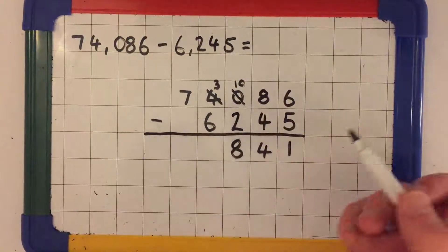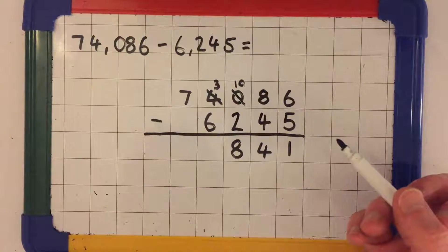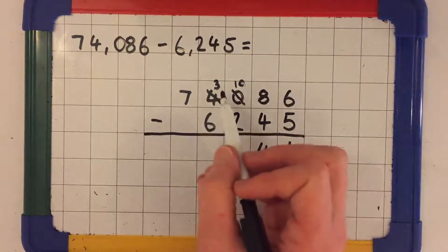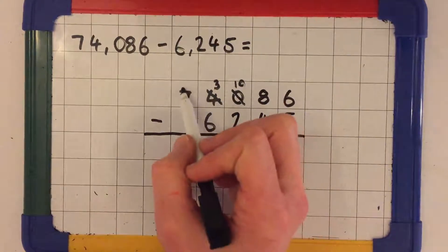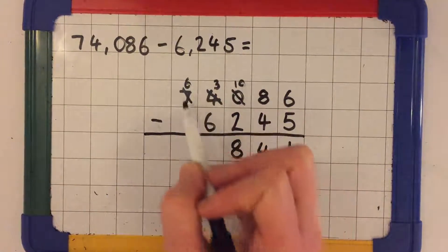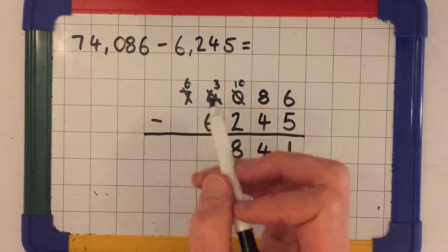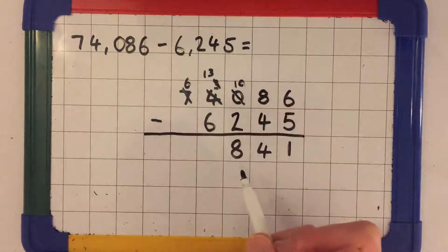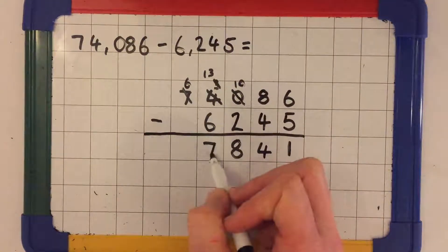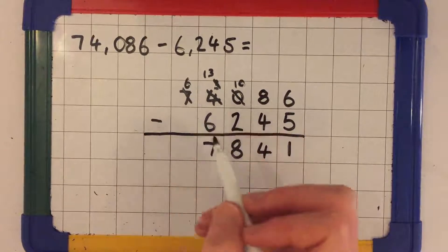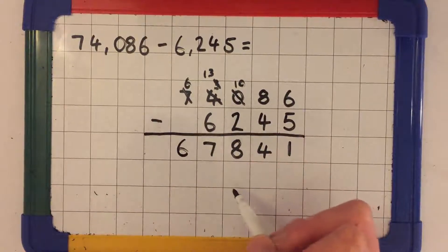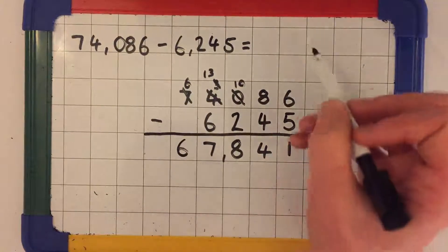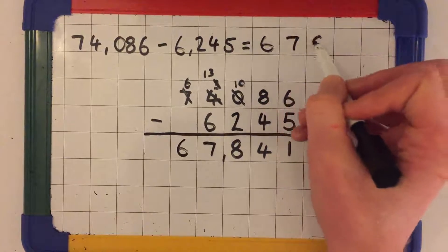3 subtract 6. I can't do that again. You've got a red alert. So I'm going to exchange one of my 10,000 for 10 thousands. Instead of 7 ten thousand I now have 6 ten thousand. Instead of 3,000 I have 13,000. 13 subtract 6 is 7. And finally 6 subtract 0 is 6. Our answer then is 67,841.